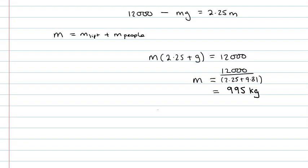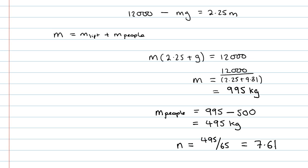So that's our total mass. So we want to know the mass of the people, which will be 995 minus the mass of the lift, which is 500. So that gives us 495 kilograms. And we wanted to know how many people could safely fit in the lift if each person weighed 65 kilograms. So if we divide 495 by 65, that gives us the answer of 7.61. So our n is 7.61.